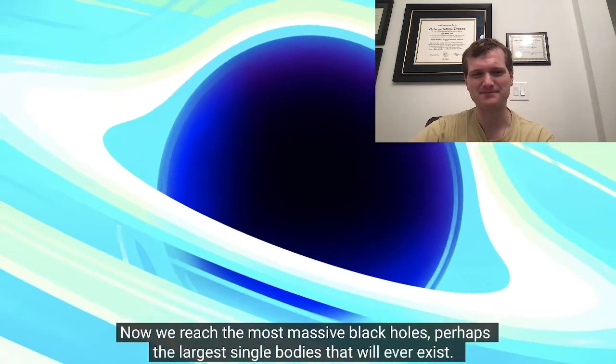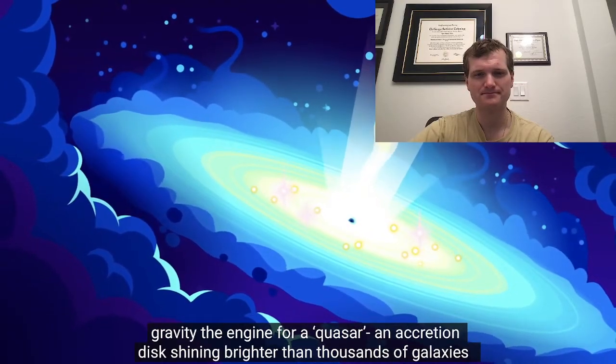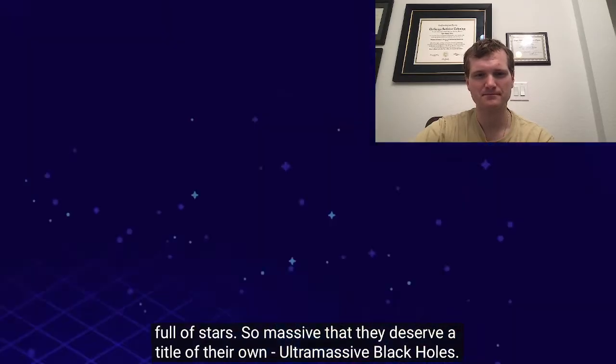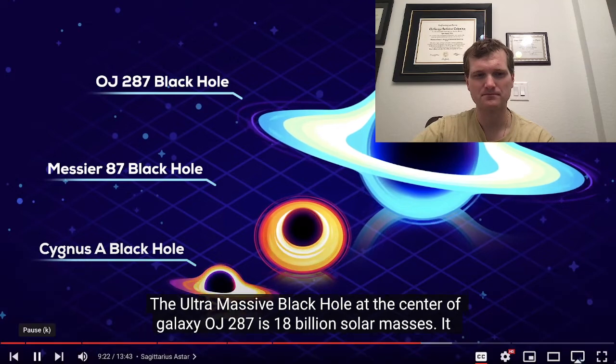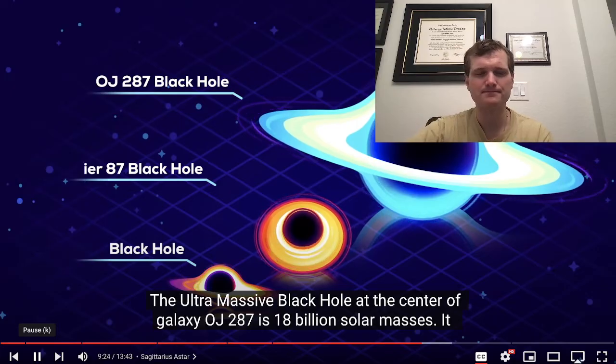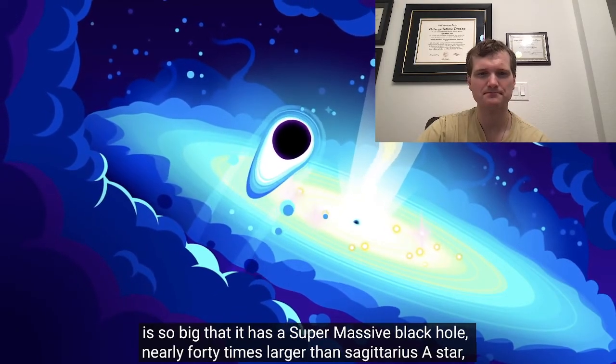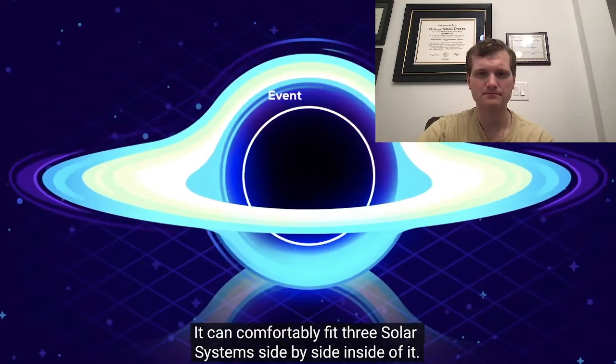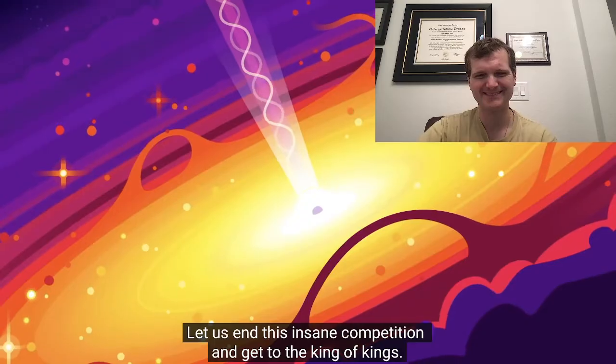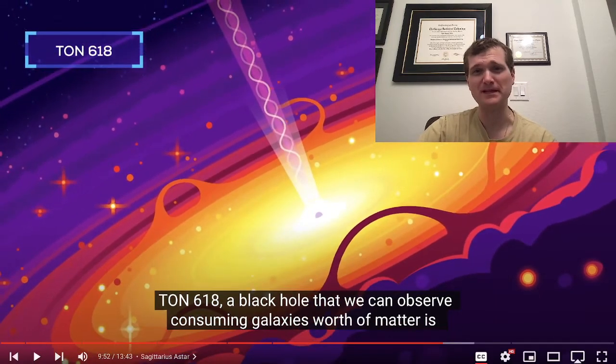Now we reach the most massive black holes, perhaps the largest single bodies that will ever exist. These black holes have eaten so much that they've grown to tens of billions of solar masses. Their gravity, the engine for a quasar, an accretion disk shining brighter than thousands of galaxies full of stars, so massive that they deserve a title of their own. Ultramassive black holes. The ultramassive black hole at the center of galaxy OJ 287 is 18 billion solar masses. Okay, I've heard of quasars, but not ultramassive. It's so big that it has a supermassive black hole nearly 40 times larger than Sagittarius A-star orbiting it. This thing defies imagination and is really hard to compare to anything. It can comfortably fit three solar systems side by side inside of it. Let's end this insane competition and get to the king of kings. TON 618. Appropriately named. A ton.